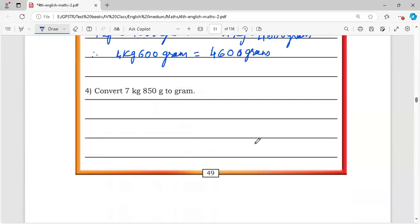Convert 7 kg 850 gram to gram. Similarly to the above problem, 1 kg is equal to 1000 grams. Therefore, 7 kg is equal to 7000 grams. 7 kg 850 gram is equal to 7850 grams.